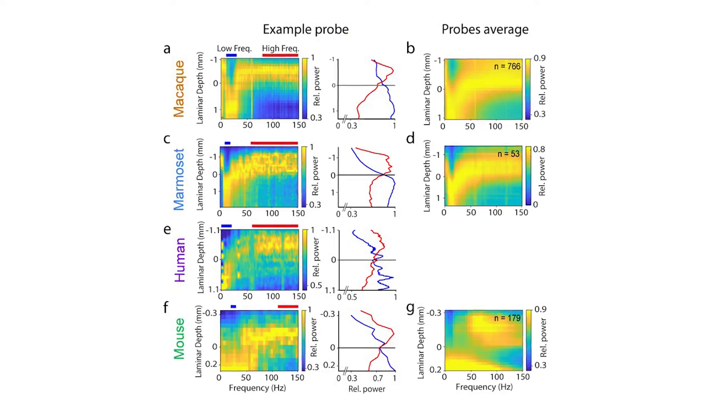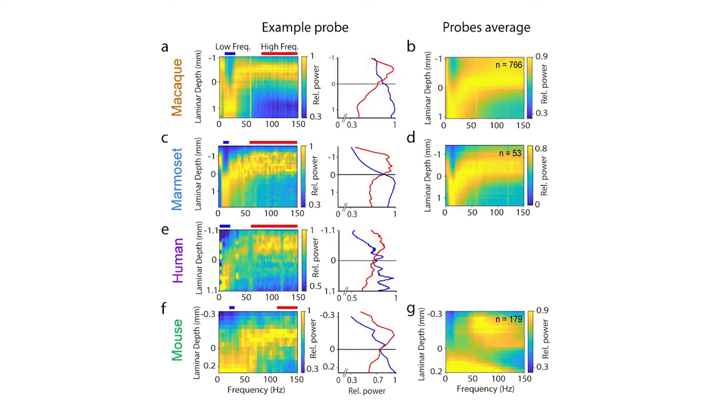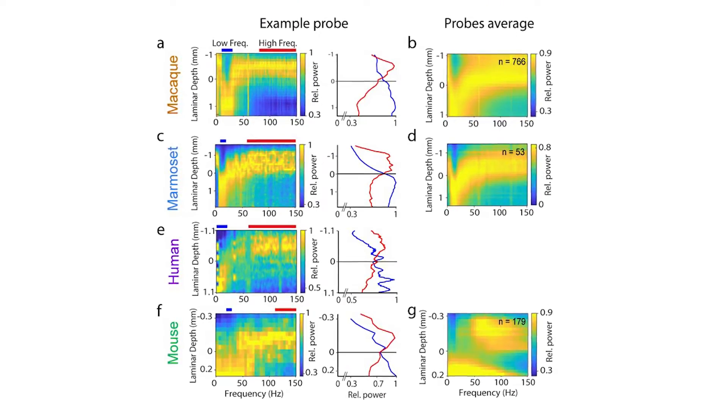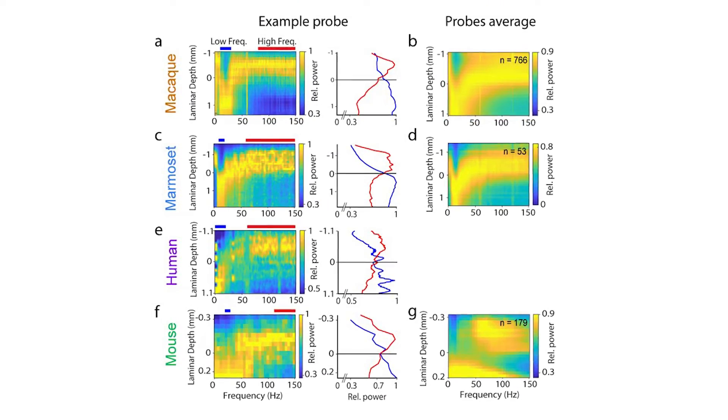Our results also suggest that these mechanisms work similarly across mammals, including humans. But we also saw differences in the spectro-laminar pattern between species, suggesting that the mechanisms may have evolved and perhaps even refined themselves through evolution. And this perhaps may help us explain why humans have higher cognitive abilities than other animals.